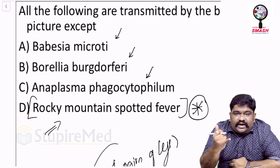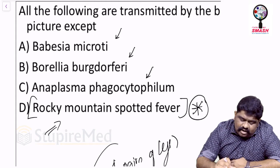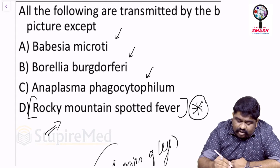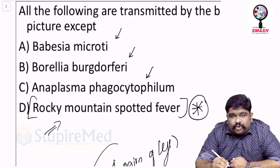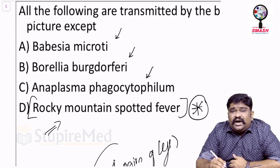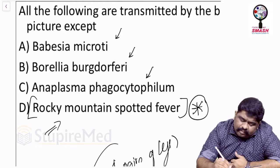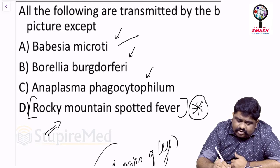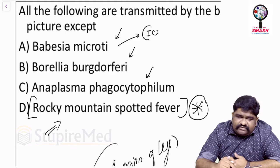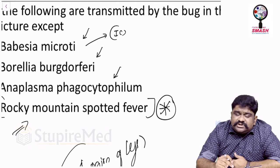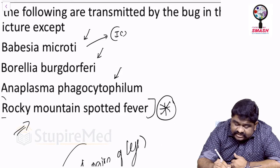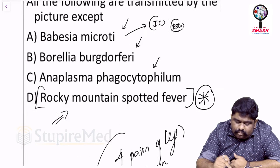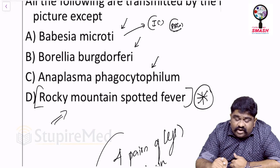Babesia microti is known for causing babesiosis and can be spread by the Ixodes tick. It causes intracellular infection — it lives intracellularly inside red blood cells (RBCs).